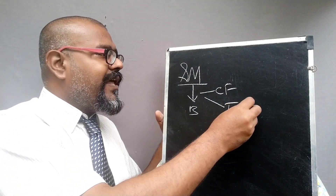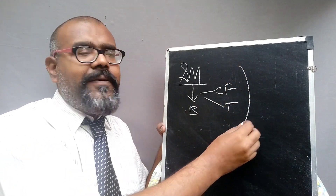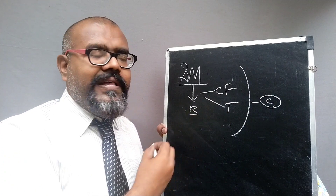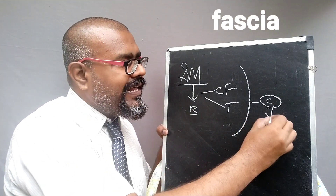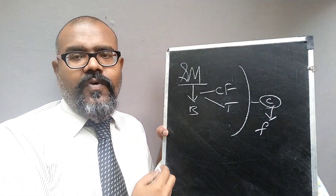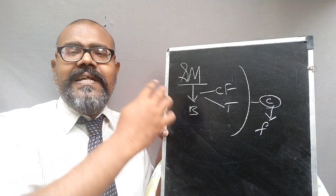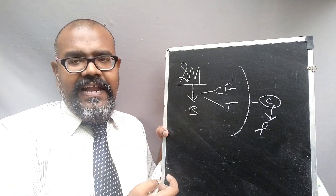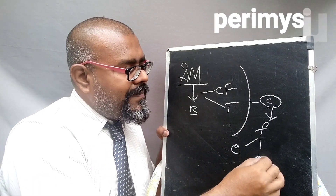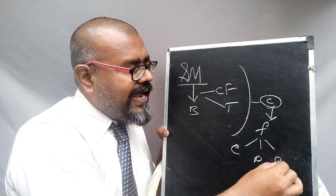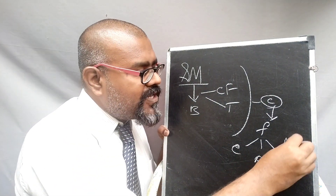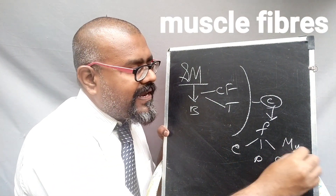The skeletal muscle is fully made up of connecting tissue. These connecting tissues are collectively called the fascia. This fascia is covered by three different layers: epimysium, perimysium, and endomysium. Inside those layers, the muscle fibers are present.